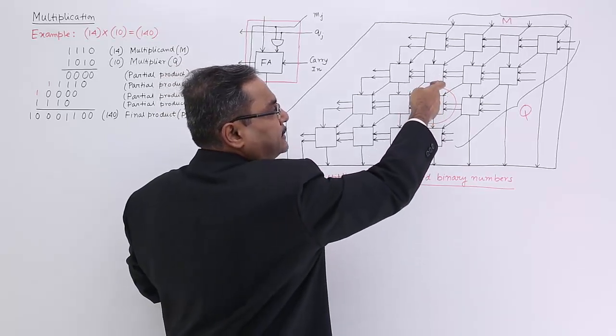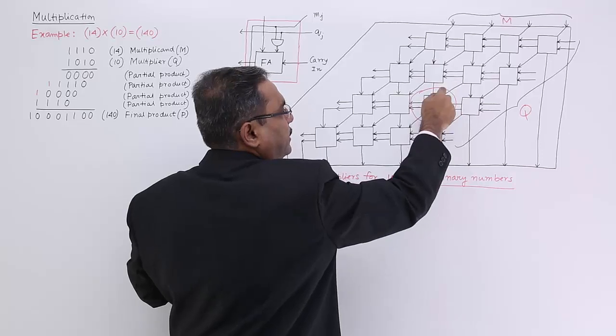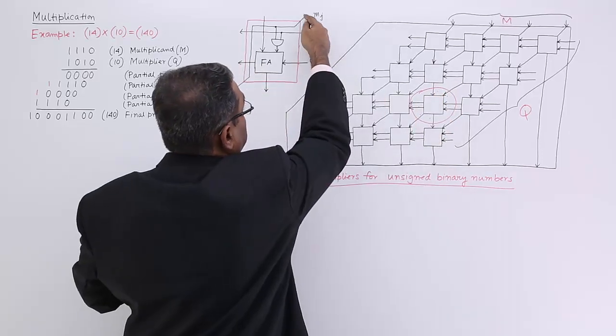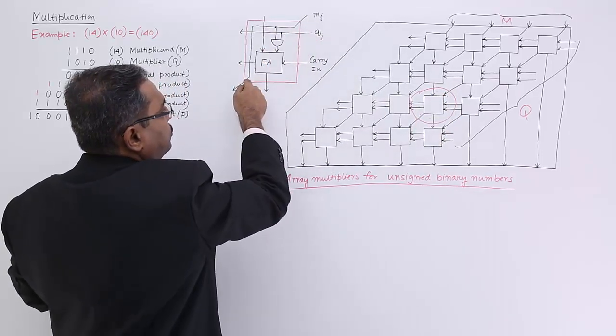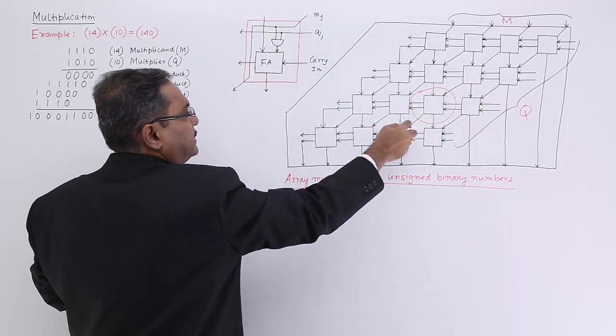So here it's coming, the sum bits are coming here and this is the multiplicand bit is coming. So this multiplicand bit, same thing, the multiplicand bit is also going through. So this bit and this bit are the same bits, same bits.